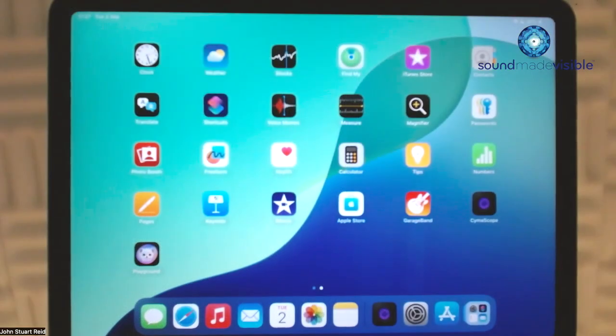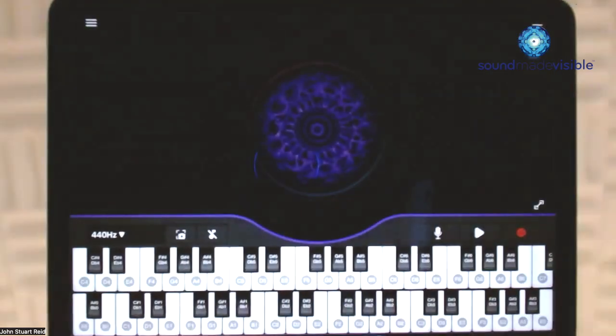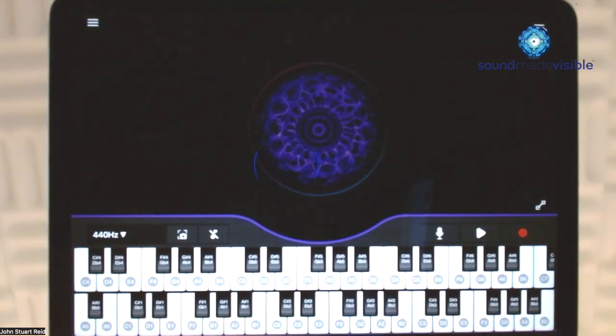Now, let's take a look at some of this groundbreaking app's main features. When you first open the app and haven't tapped any icons, it's automatically in keyboard mode, so you can play a melody and watch the beautiful cymoscope imagery emerge.